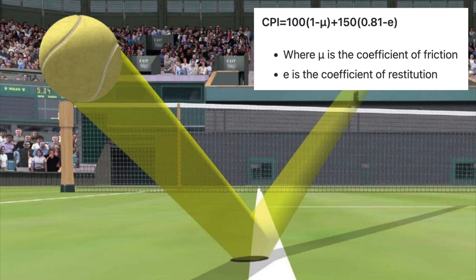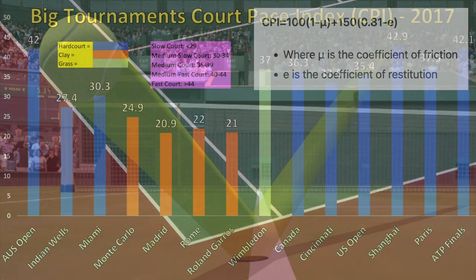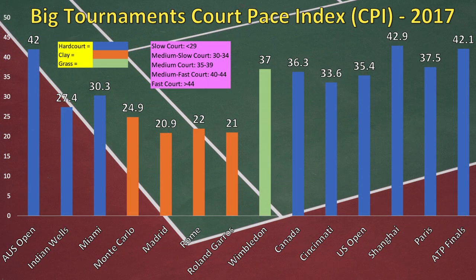In simple terms, CPI measures the speed of the ball just before impact with the court surface and the speed at which it leaves the surface. This is our way of measuring how quickly certain courts are playing. It was first introduced in 2016 by Tennis TV, but has since been used regularly to measure court speeds at the biggest tournaments in the world — the Majors, Masters 1000s, and Year-End Finals.